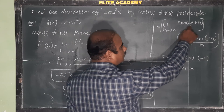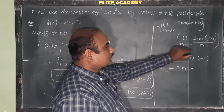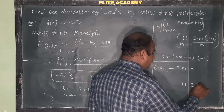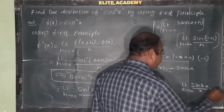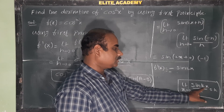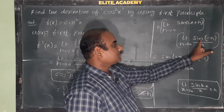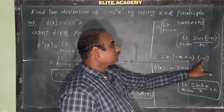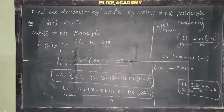Here, substituting h = 0 in sin(2x+h) gives sin(2x). For the standard limit, we compare with the formula: limit of sin(kx)/x as x tends to 0 is equal to k. Here, the variable is h, so sin(h)/h as h tends to 0 gives 1, and since we have sin(-h)/h, the coefficient gives -1. So -1 × sin(2x) = -sin(2x). Therefore, f'(x) = -sin 2x.